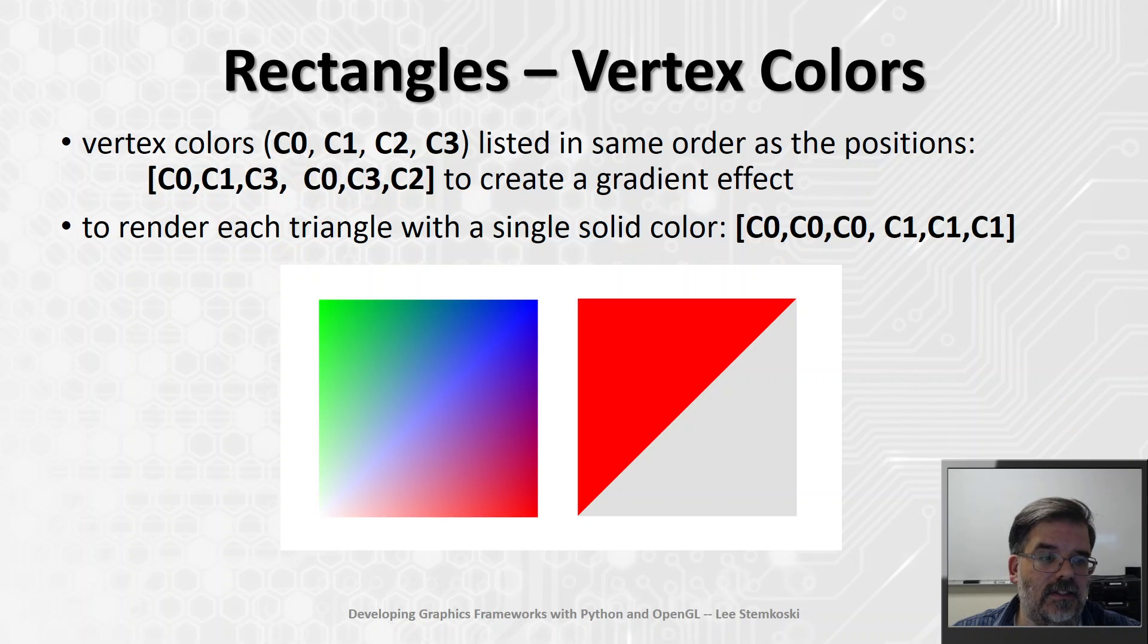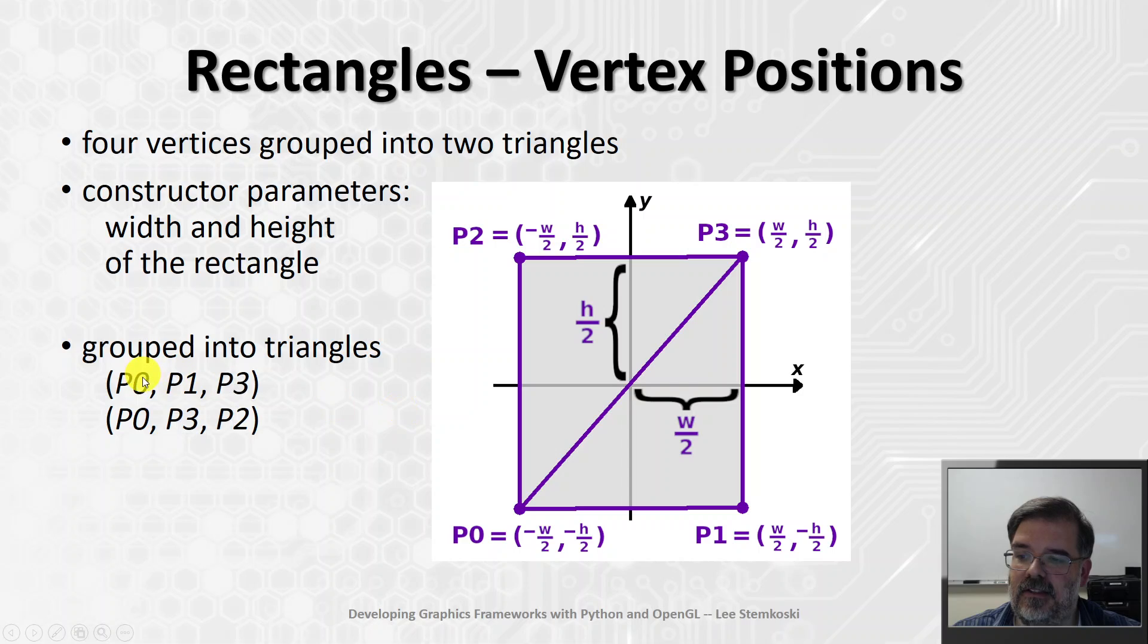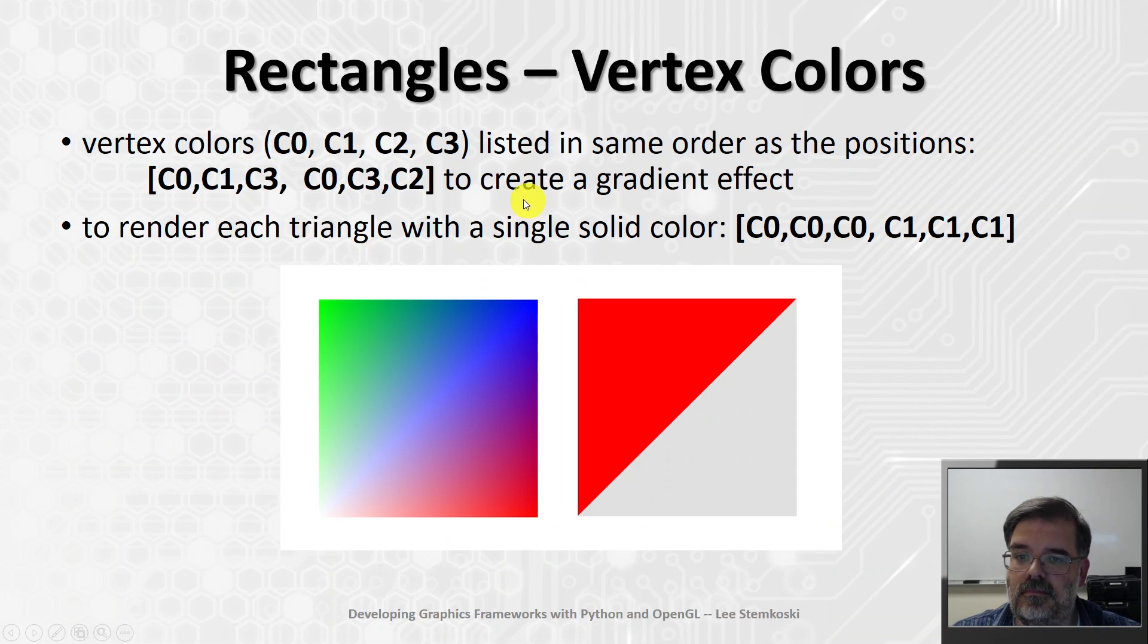This ordering is the same as on the previous slide. 0, 1, 3, 0, 3, 2. And that will create a really nice gradient effect because, you might remember, that the GPU interpolates the colors of every pixel by doing some weighted average combination of the vertex colors.